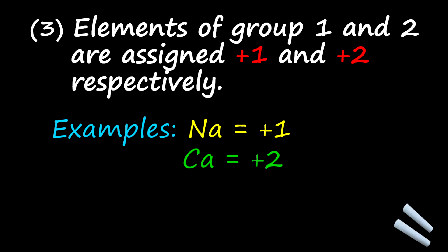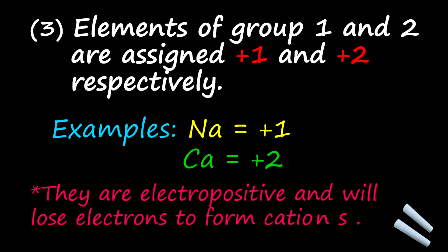What is the rationale behind this? For them to always be positive one and positive two respectively. Simply put, they are electropositive and will lose electrons to form cations. So group one and group two will always form cations.